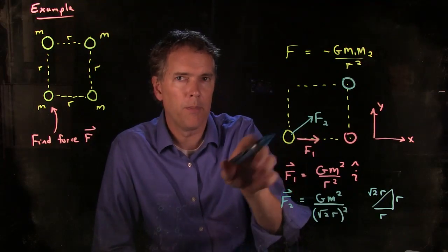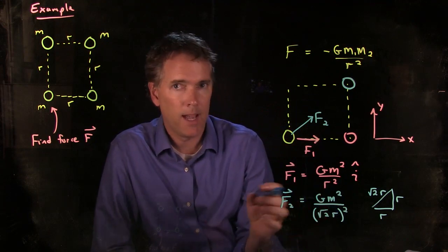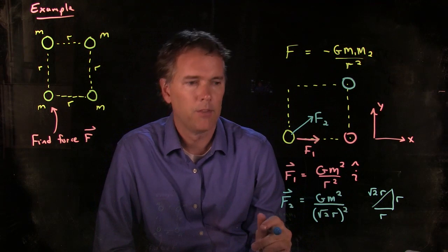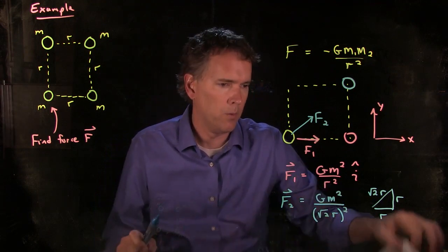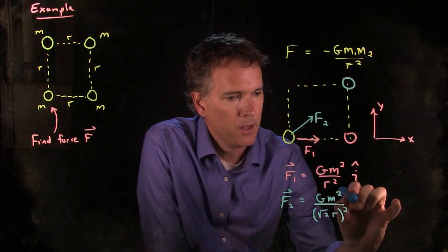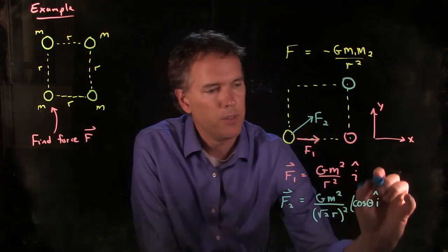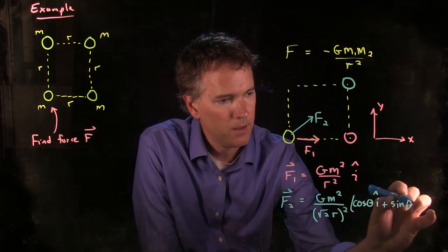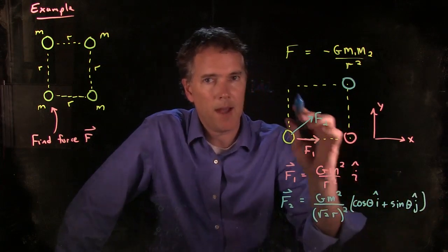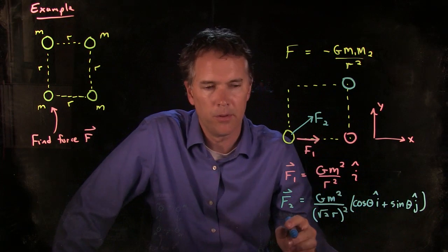Now we have to be careful about the direction here. F2 has an i-hat component and a j-hat component because it's going up at an angle. So there's some component in the i-hat, cosine theta i-hat, and some component in the j-hat, sine theta j-hat. And that theta just happens to be 45 degrees, so we'll be able to plug those numbers in and simplify quite a bit.